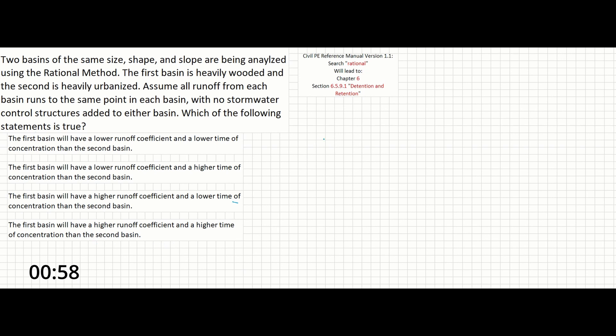So essentially we've got two drainage areas, one heavily wooded with all the pretty trees inside of it. The second one is heavily urbanized with all the buildings on it. They've noted in the problem that pretty much everything else is the same. They flow to the same points at the end and there's no additional engineering structures to control the stormwater. So this is a question pretty much just about the rational method itself.